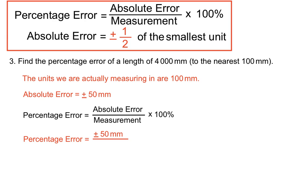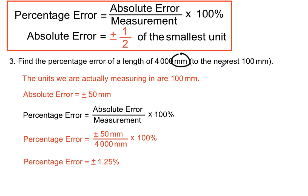We run those numbers through our percentage error formula: absolute error on top — which is half of what we're measuring in, 50 mm — and the measurement itself on the bottom, 4,000 mm, multiplied by 100. That gives us plus or minus 1.25% as our percentage error. It looks like we're measuring in millimetres, but because they said we're rounding to the nearest 100 millimetres, we're effectively measuring in lots of 100 millimetres, so the absolute error is plus or minus 50 millimetres.